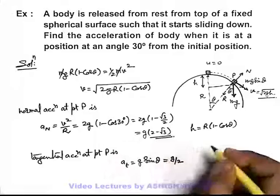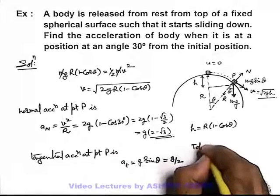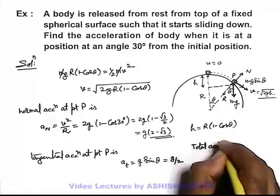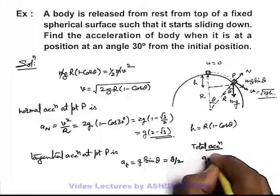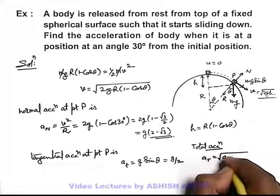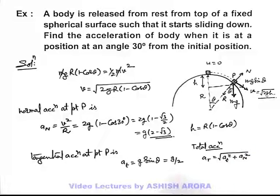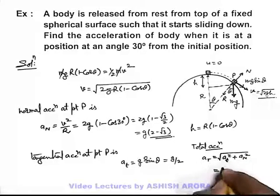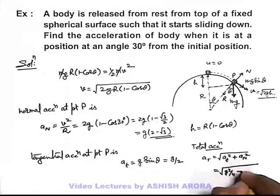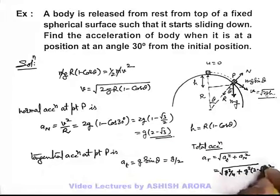And if we talk about the total acceleration, we can state it as total acceleration of the body, that is a_total, can be written as root of a_tangential^2 plus a_normal^2. When we substitute the values, it will be root of a_tangential^2 which is g^2/4, plus a_normal^2 which is g^2 times (2 - root 3) whole square.